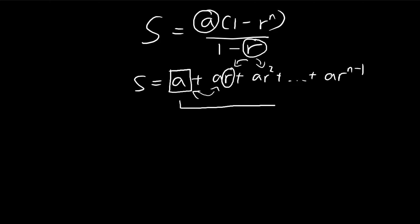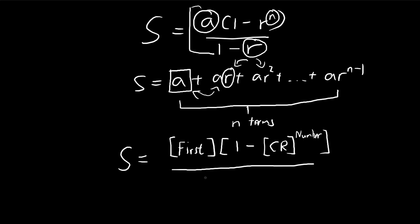Notice that in the entire series, we have n terms. Instead of memorizing all these symbols, we can actually rewrite the formula as S equals the first term multiplied by 1 minus the common ratio to the power of number of terms divided by 1 minus the common ratio.